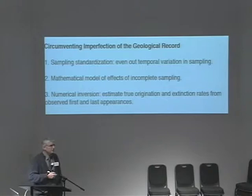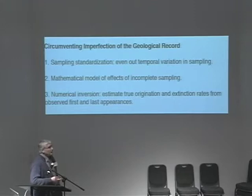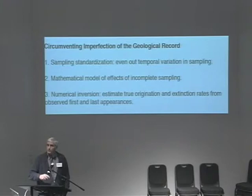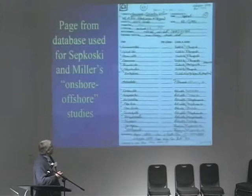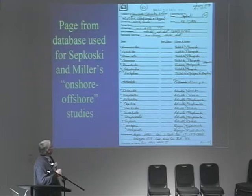We can develop mathematical models of incomplete sampling that allow us to say, in a forward sense: if we had a certain true pattern of origination, extinction, and sampling, what would the distorted pattern look like? Then the third part is: given the observed pattern, which we know is distorted, how do we do the inverse procedure through that model to estimate the true history? An important development here is databases with the kind of information that allow us to do sampling standardization — such as a data sheet from a project Miller and Sapkowski did in the 1980s, listing taxa from particular localities with various geologic, environmental, and temporal contextual information.